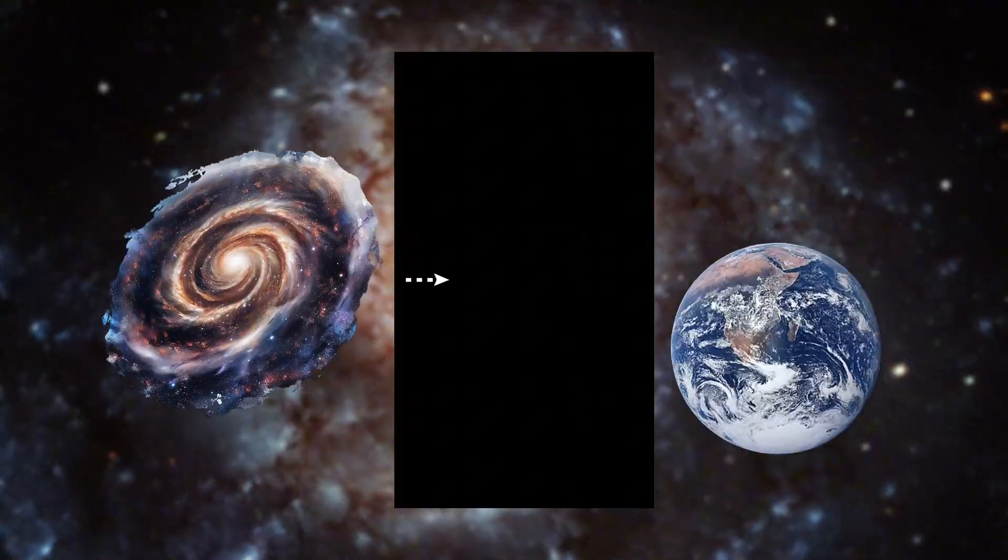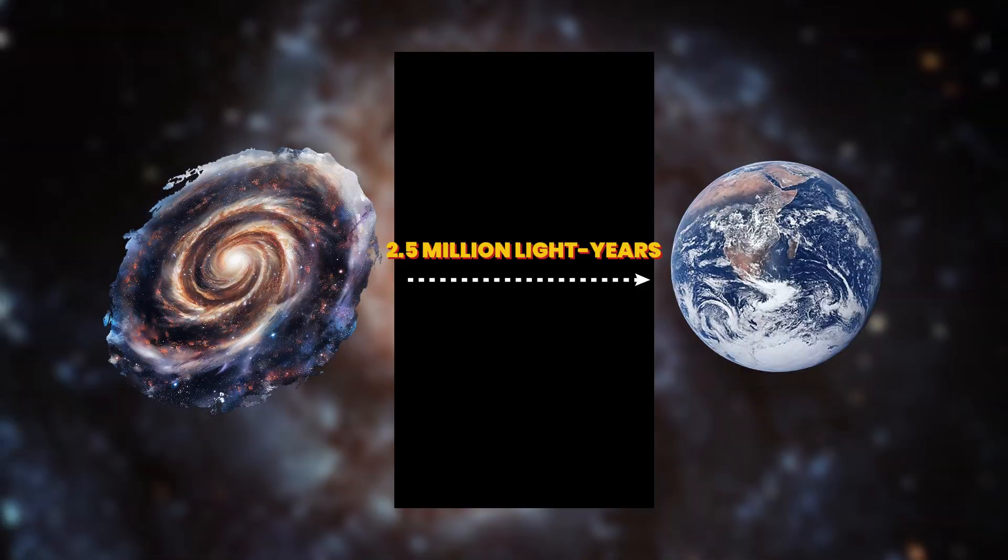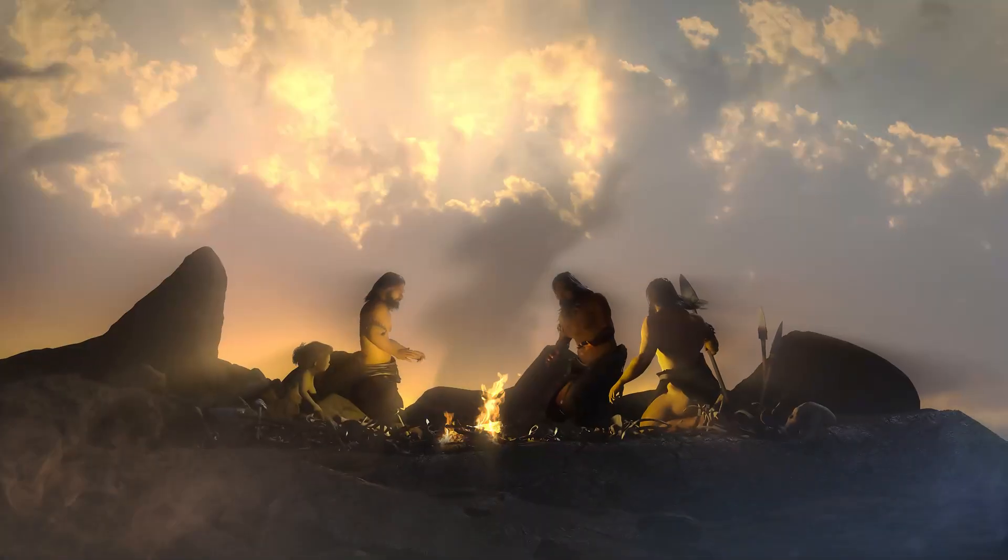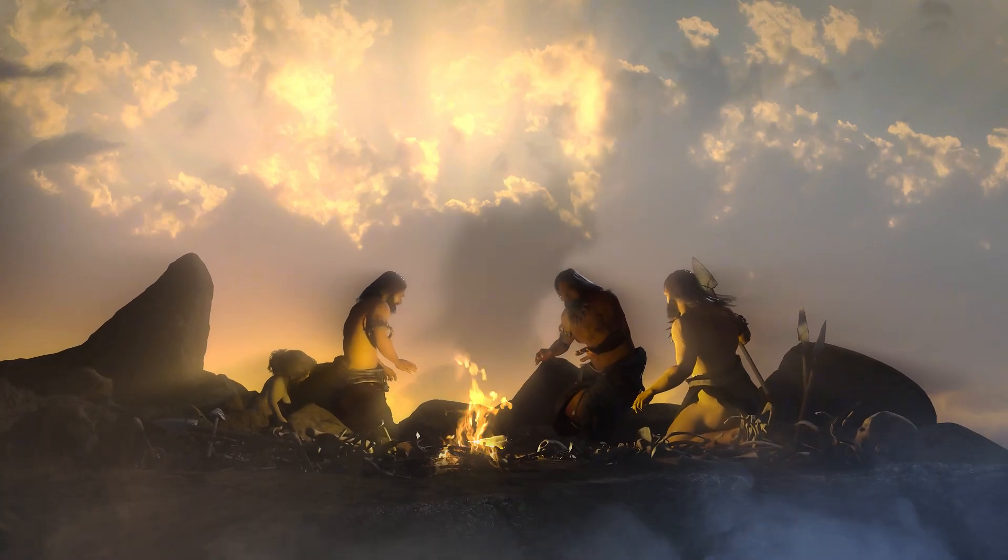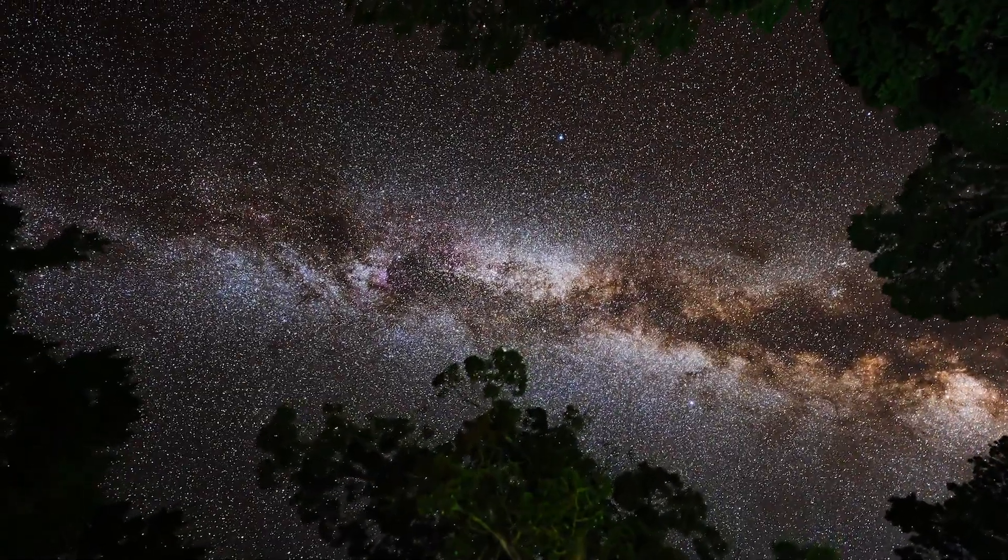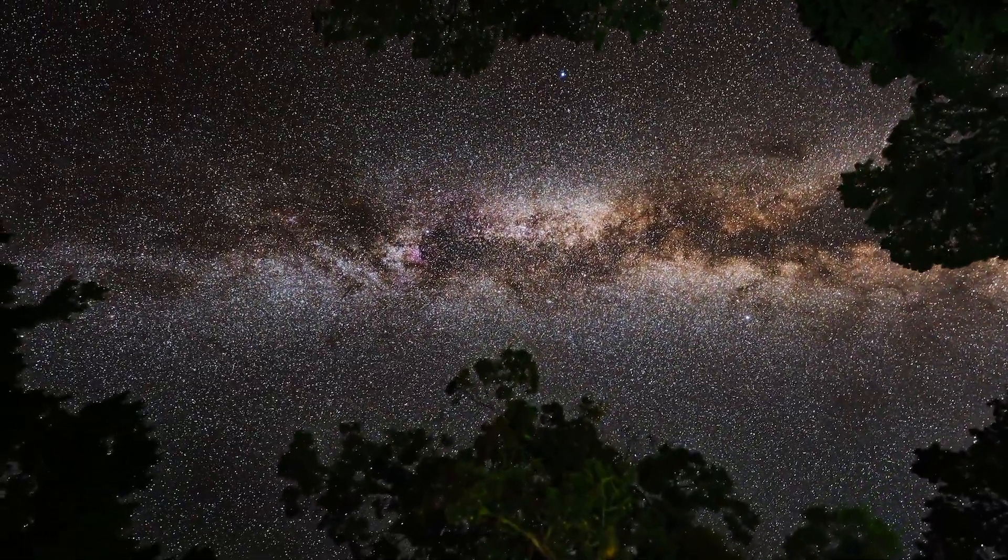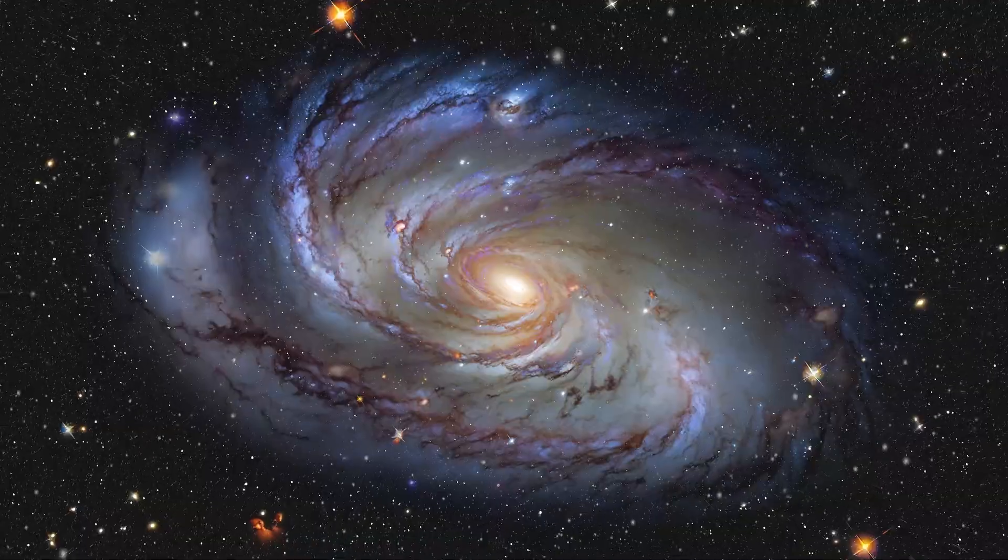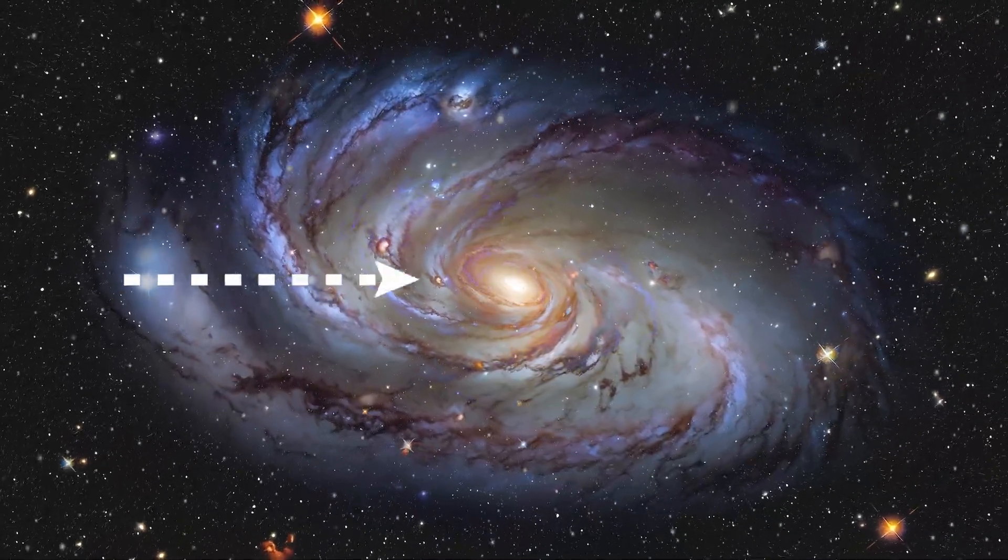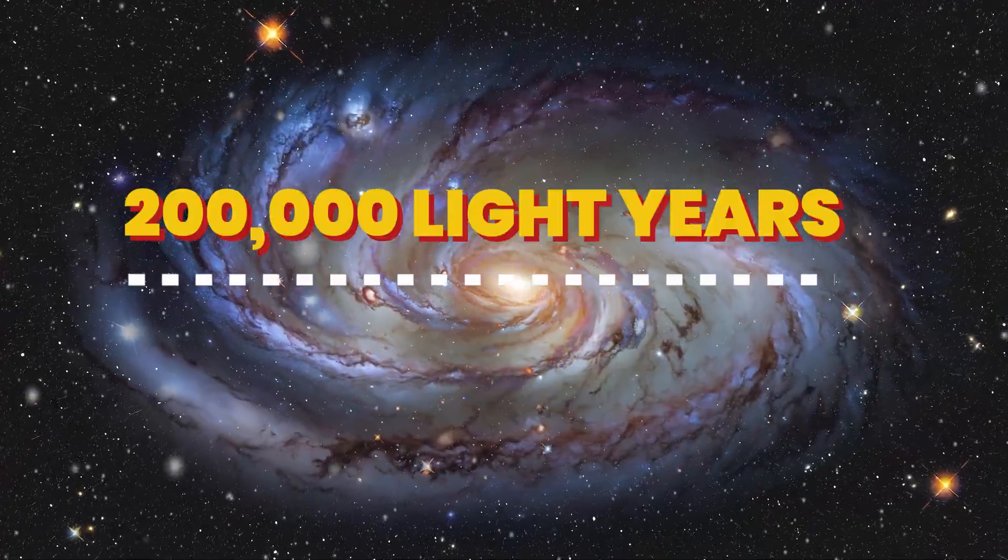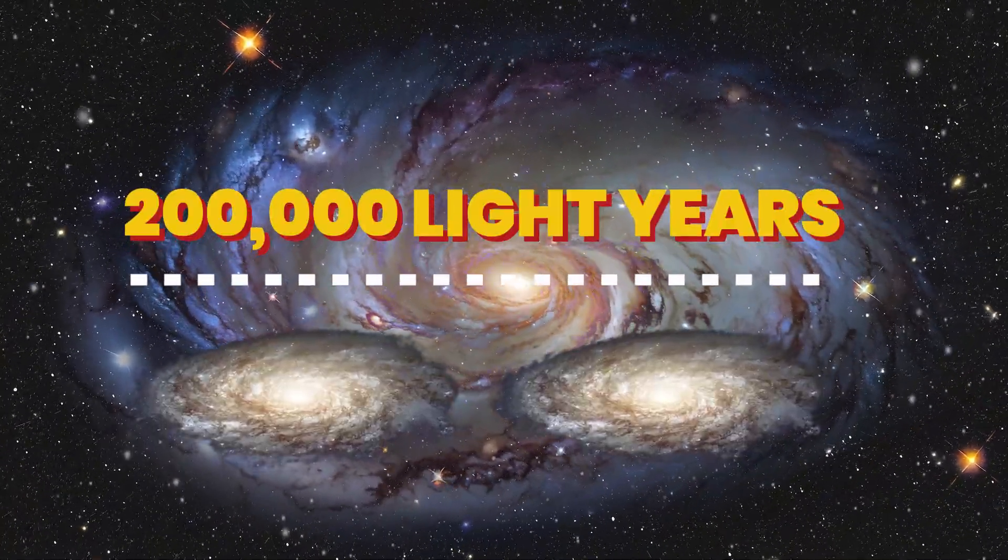The Andromeda galaxy resides about 2.5 million light-years away from Earth. In other words, the light we see from it left before early humans ever walked the Earth. It's the nearest large spiral galaxy to us. There are several dwarf galaxies that are closer, but none truly compare in size. Andromeda is truly a colossus. Recent measurements put its diameter at around 200,000 light-years across, roughly double the span of our own Milky Way.